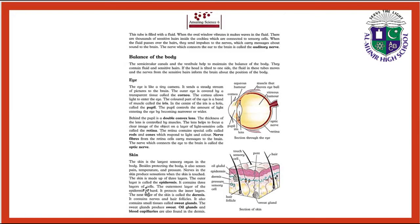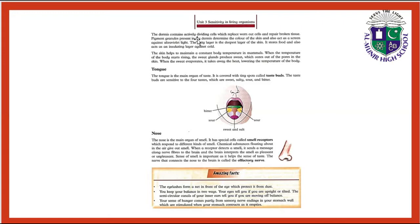The epidermis contains three layers of cells; the outermost layer is hard and protects the inner layers. The next layer is called the dermis, which contains nerves, hair follicles, sweat glands, oil glands, and blood capillaries. The dermis also contains actively dividing cells which replace worn-out cells and repair broken tissues. Pigment granules present in the dermis determine the color of the skin and act as a screen against ultraviolet light.